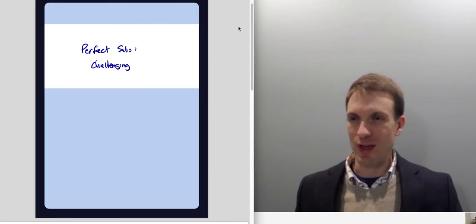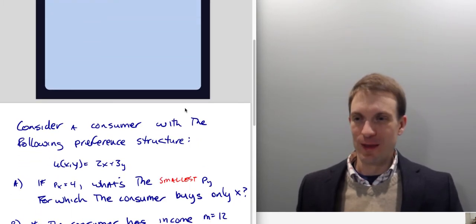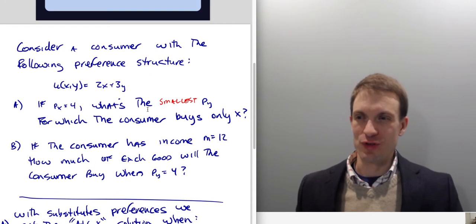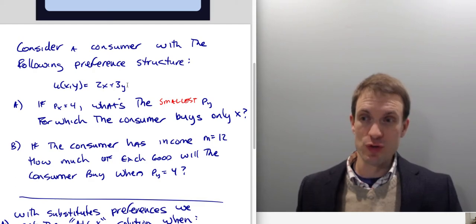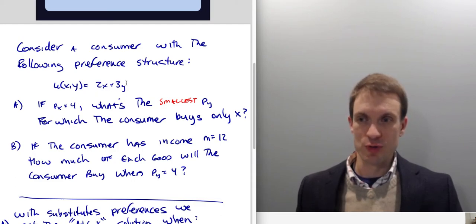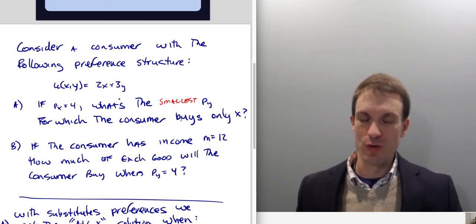Now for a numeric example — and I'll call this challenging. Consider a consumer with utility U(X,Y) = 2X + 3Y. The marginal rate of substitution is two-thirds, because the partial of the utility function with respect to X is two, and the partial with respect to Y is three. If the price of good X is four, what is the smallest price of good Y for which the consumer only buys X?